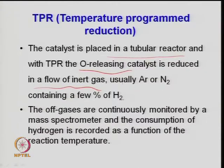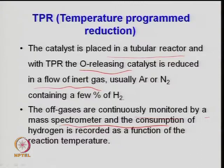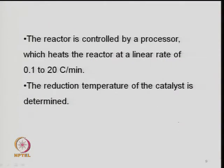For TPR, the catalyst is placed in the reactor and the oxygen-releasing catalyst is reduced in a flow of inert gas. You pass nitrogen with a small concentration of hydrogen, and hydrogen reacts with the oxide sites to give the temperature required for reduction. Off-gases are continuously monitored by a mass spectrometer or detector, and hydrogen consumption is recorded as a function of reaction temperature at different heating rates. From the temperature versus time plot, you can find how many molecules of hydrogen are consumed at a given temperature.